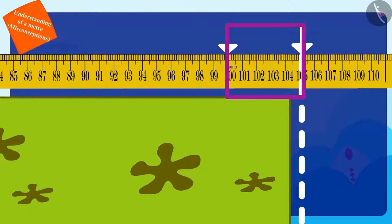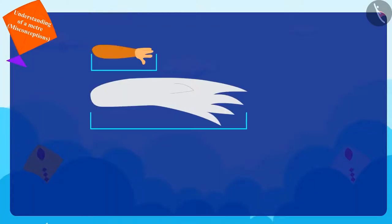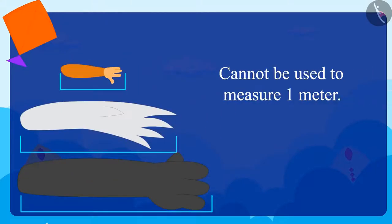Chanda explained to chacha and Golu that the length of one arm varies for everyone, so they cannot use it to measure one meter.